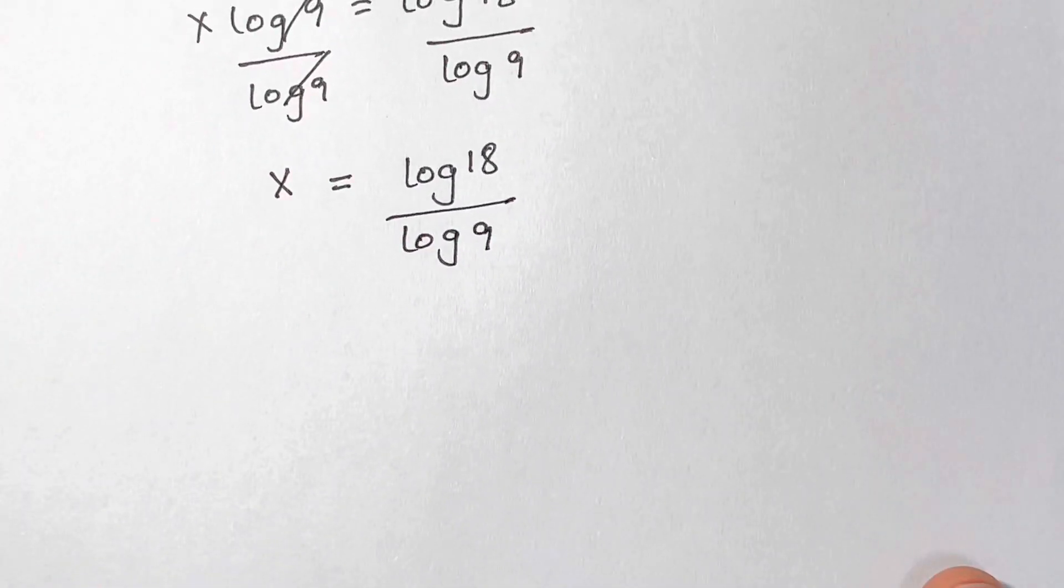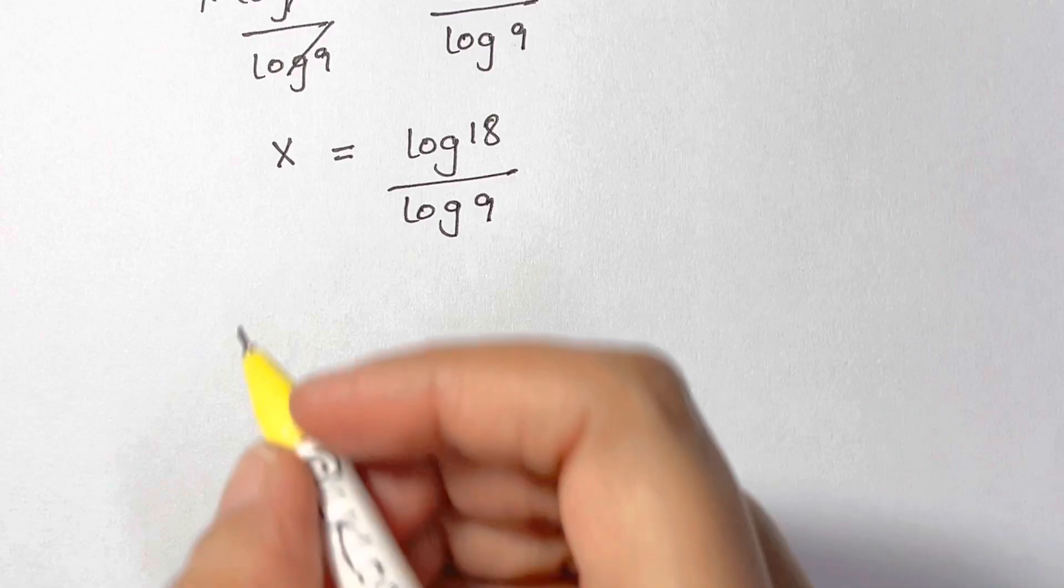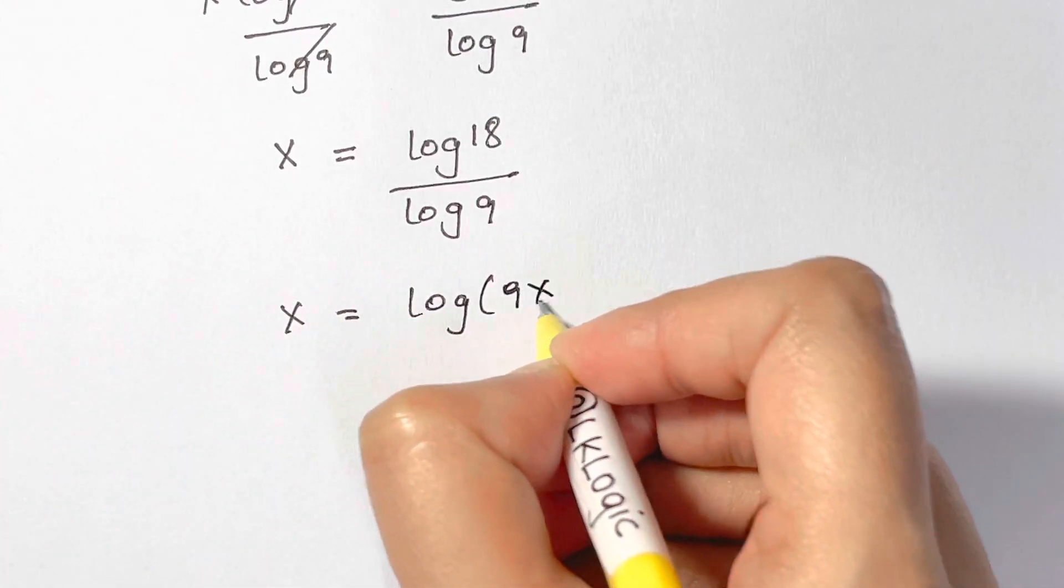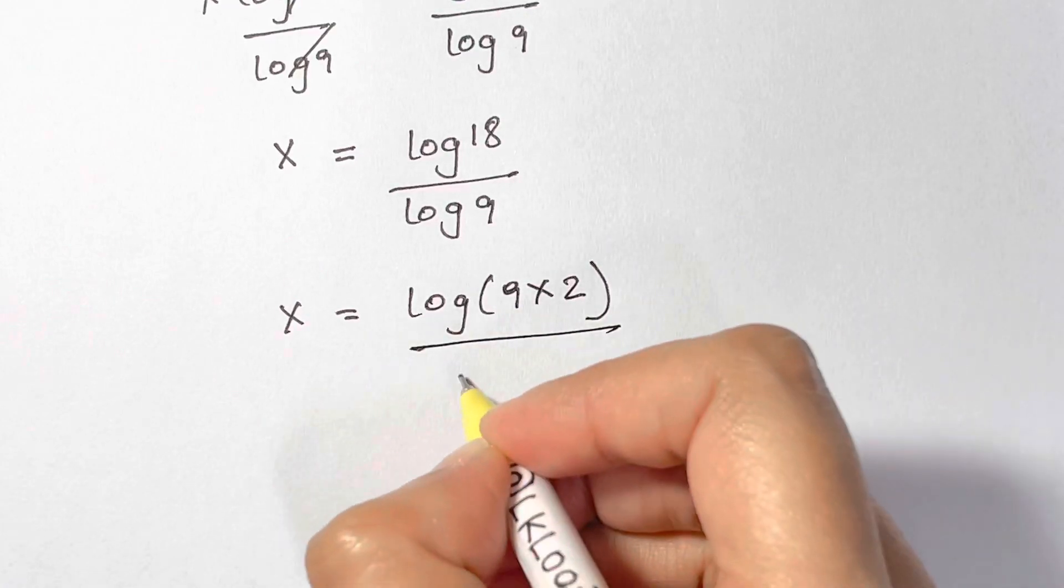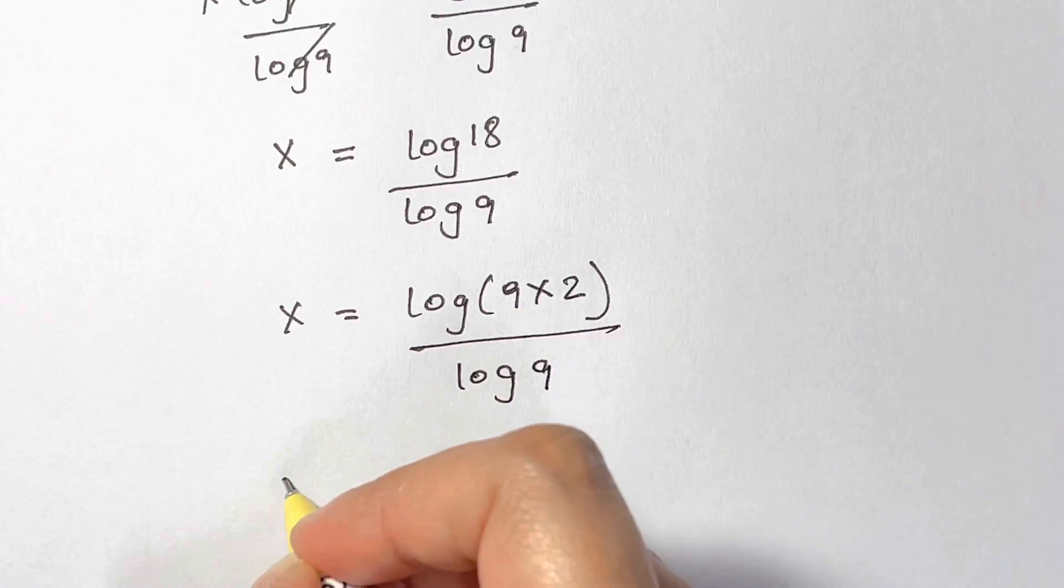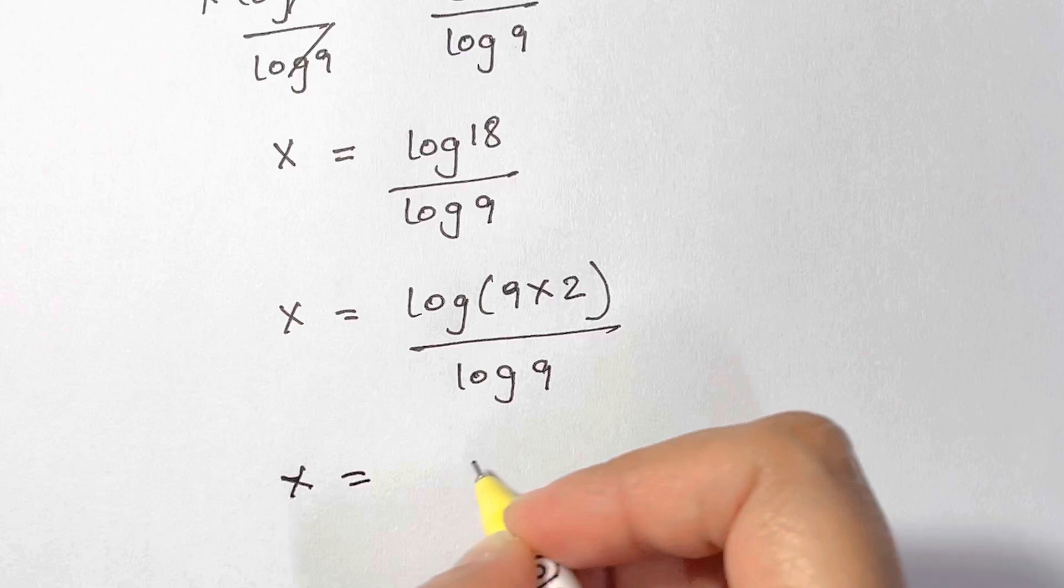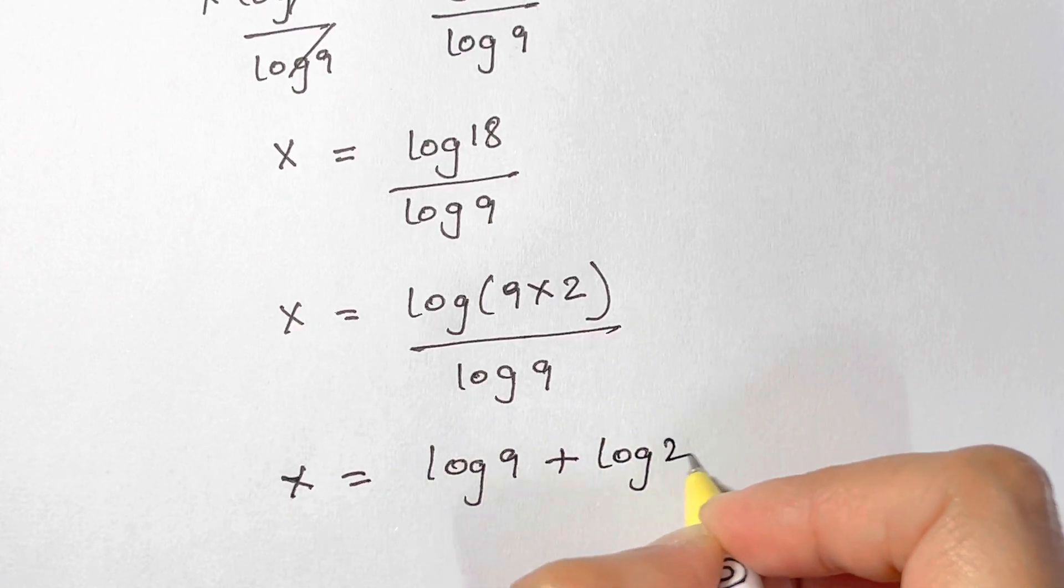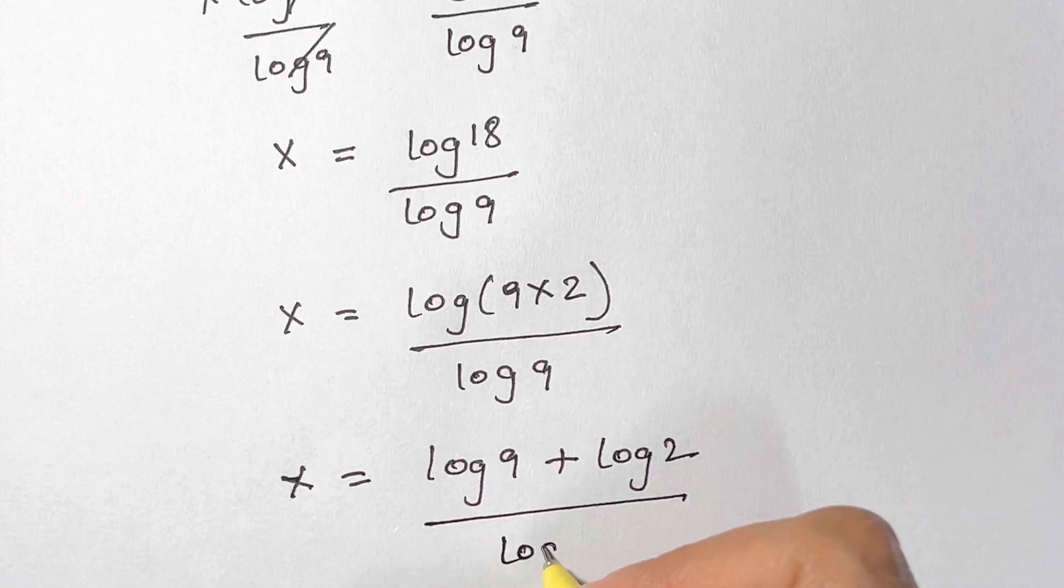Then what do we have? Log 18 can be written as x equals log 9 times 2, and this is over log 9. So we have x equals log 9 plus log 2 over log 9.